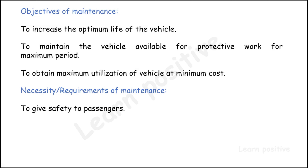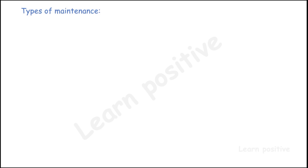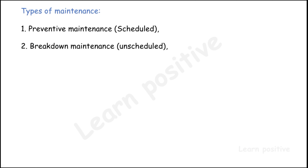The necessities and requirements of maintenance are: to give safety to passengers traveling in the vehicle, to ensure the vehicle is in good running condition, to reduce unnecessary breakdowns on the roads, and to handle the vehicle economically and make it easy to drive. The types of maintenance are: preventive maintenance, also called scheduled maintenance; breakdown maintenance, also called unscheduled maintenance; and periodical maintenance.